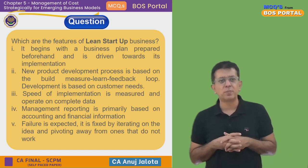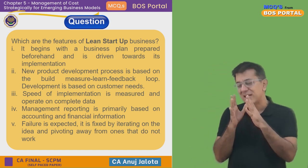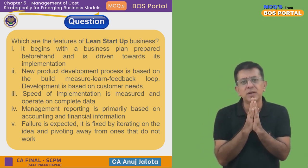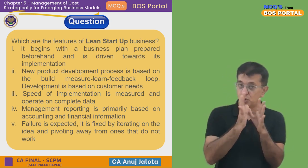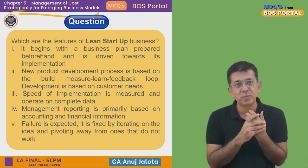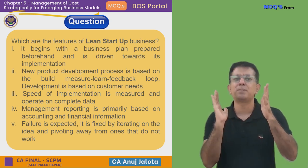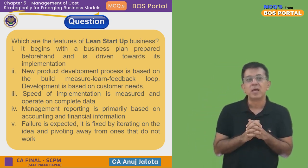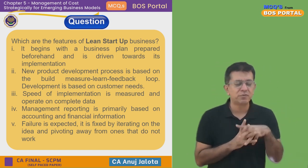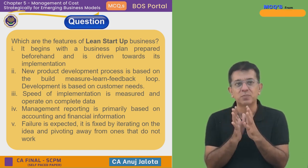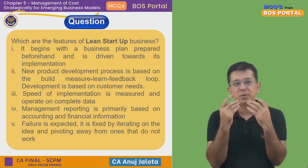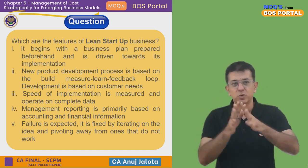In the build-measure-learn loop, you try to do something; if it does not work, you measure how much it did not work, then you learn the flaws, and then develop a product based on customer needs — so option two is right. Option three: speed of implementation is measured and operates on complete data — an established company does this, but startups are not that organized or planned, and money also becomes a constraint for measuring. So option three I will not agree with. Option four: management reporting is primarily based on accounting and financial information — if you are a startup, your accounts will be nothing, financial information will be useless. So option four is wrong.